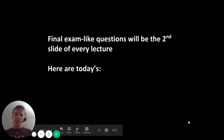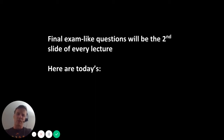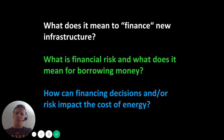One note before I get to the main part of the lecture. At the beginning of each lecture, right after the title slide, there are going to be a list of questions. Not many of the questions will themselves appear on the final exam, but they are representative of the types of questions that will be on the final exam, and they would be good ones to study in preparation. Today's questions are: What does it mean to finance new infrastructure? What is financial risk and what does it mean for borrowing money? And how can financing decisions and/or financial risk impact the cost of energy for consumers?